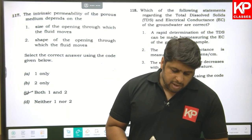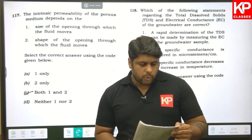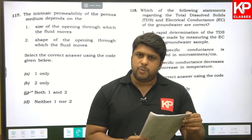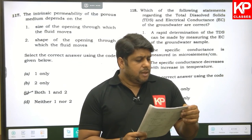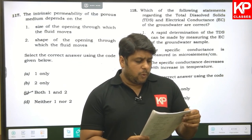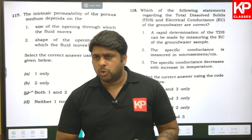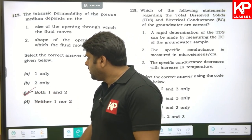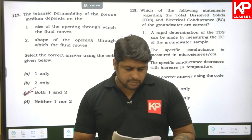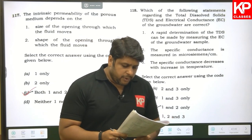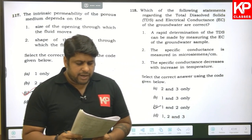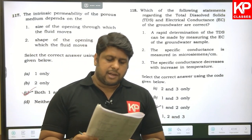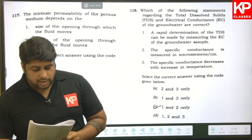Question one hundred and eighteen: the intrinsic permeability of a porous medium depends upon the size of the openings through which the fluid moves (correct) and the shape of the openings (correct). Both are true, so C is the right answer.